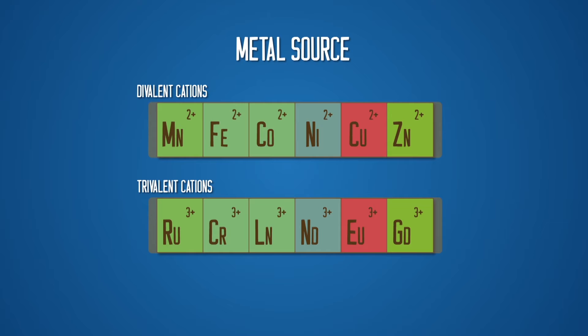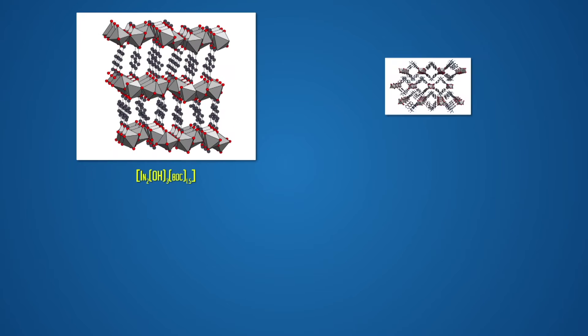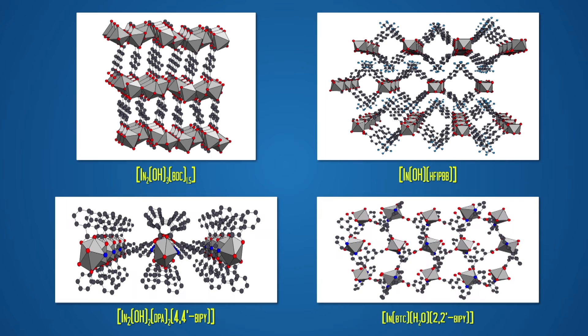However, trivalent p-metals like aluminium, gallium and indium are less explored. Our group has been a pioneer regarding the use of indium as a connector in several MOFs with good catalytic properties. So here we decided to continue working with these three cations.